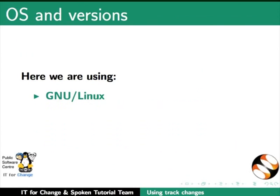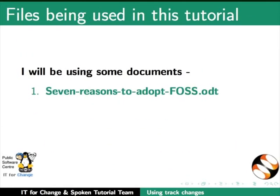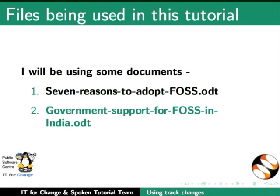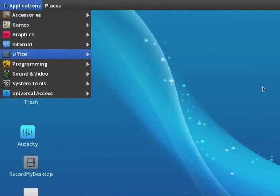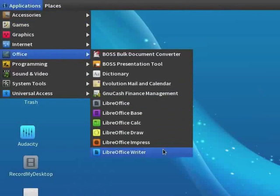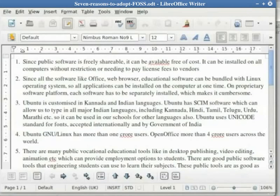Here we are using Linux as our operating system and LibreOffice 3.3.4. In this tutorial I will be using some documents that I have already created and saved on my system, namely '7 reasons to adopt FOSS.odt' and 'Government support for FOSS in India.odt'. Click on Applications, Office and LibreOffice Writer to start Writer. Open '7 reasons to adopt FOSS.odt'.